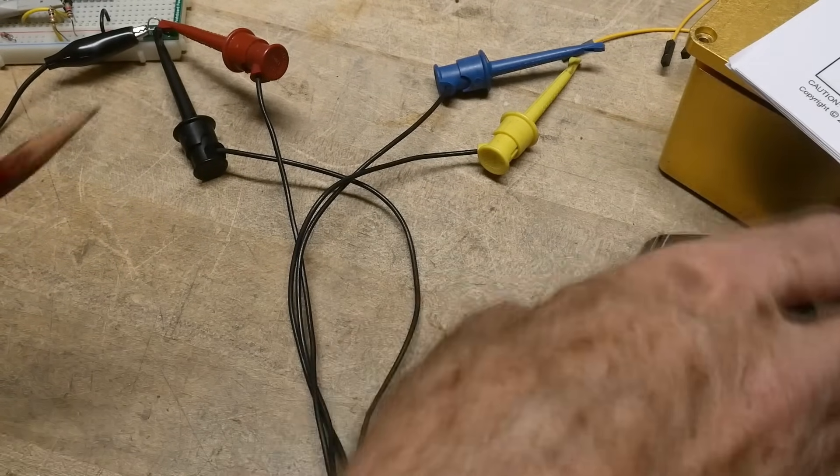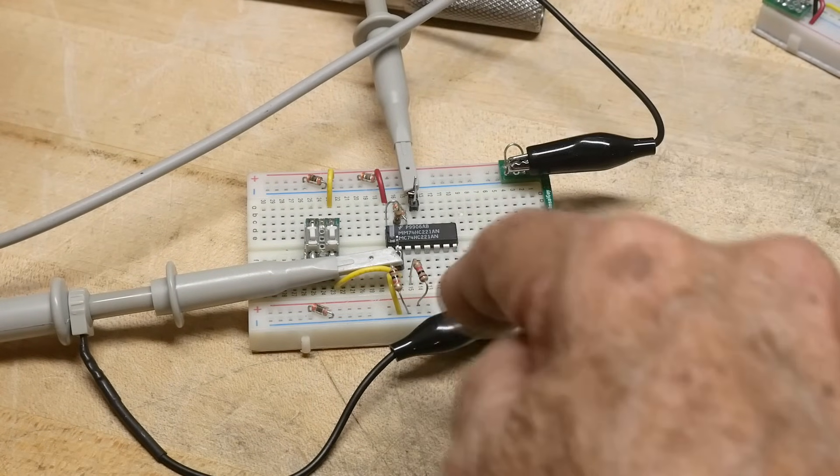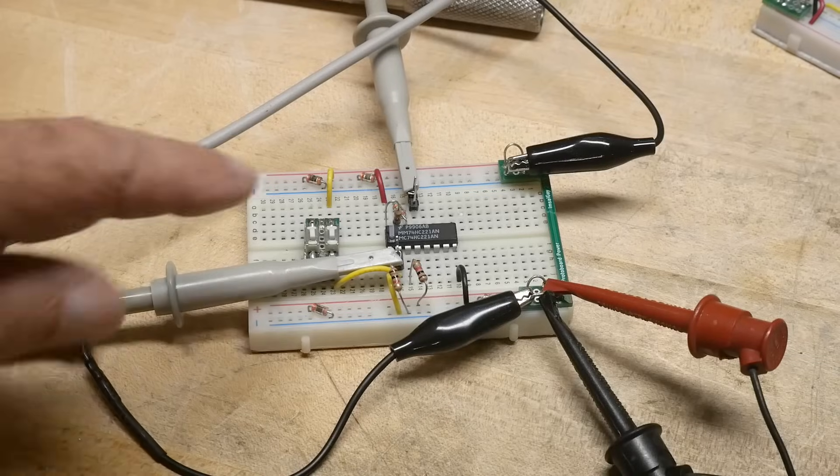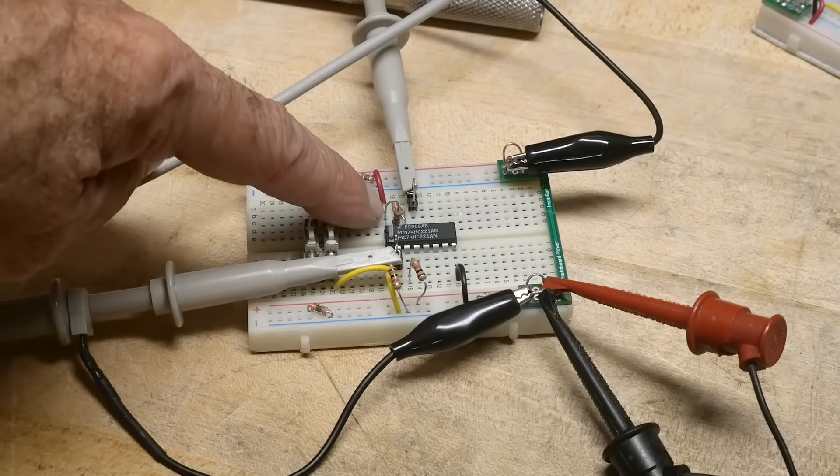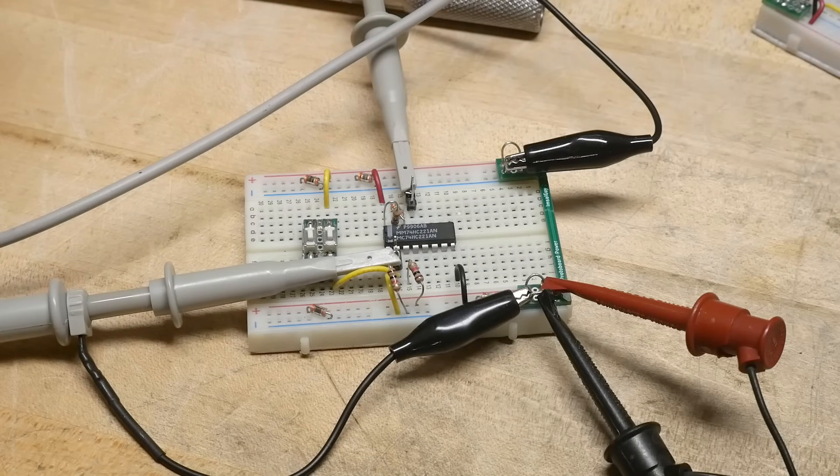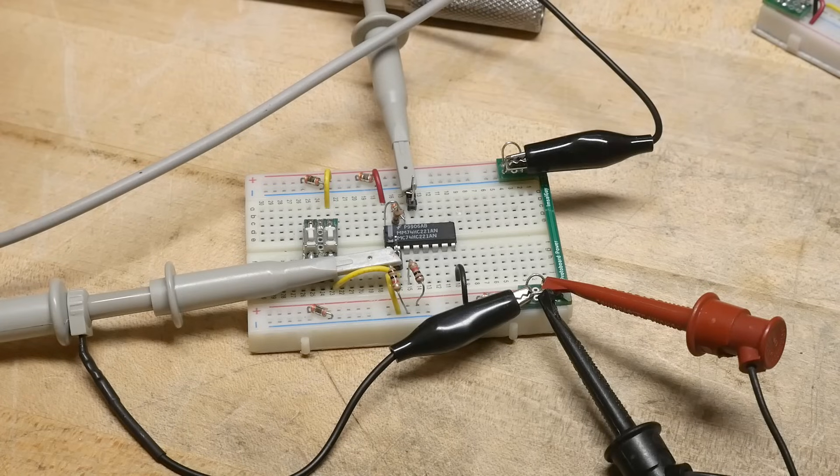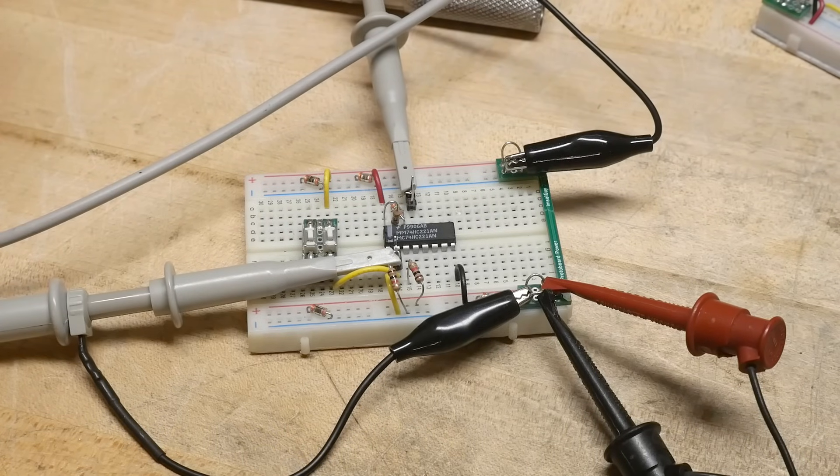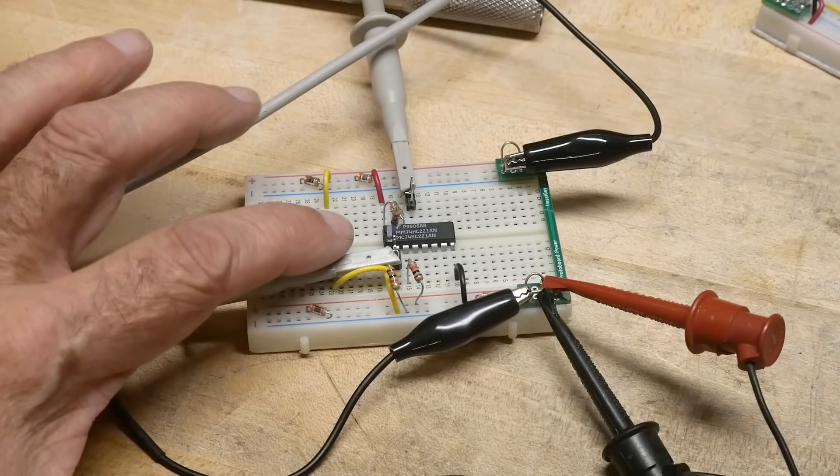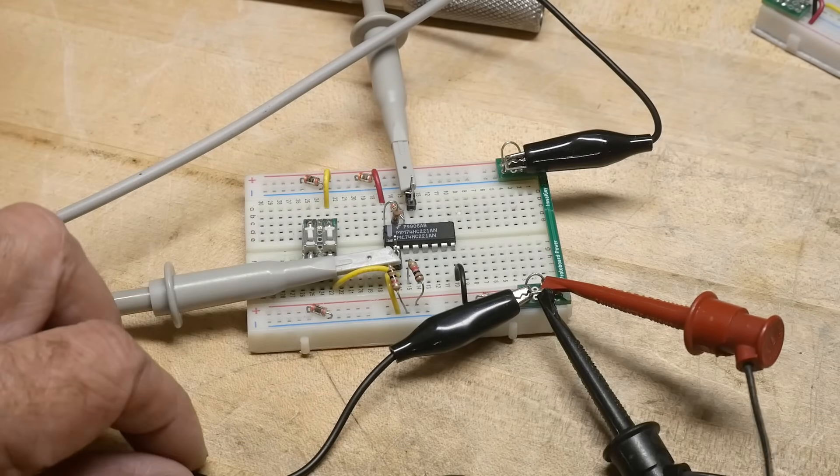Let's go ahead and play with one. Alright, so I have the 221 in here. I've got a 10K, 0.1 microfarad. It's over here. This is the 10K and this is the 0.1 microfarad timing capacitors. I just have some 1K resistors as pull-ups on the unused pins and the input. So let's turn the power on.